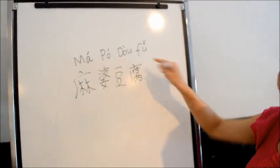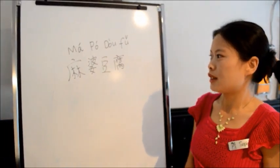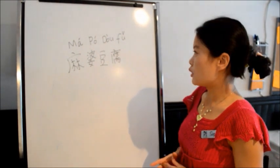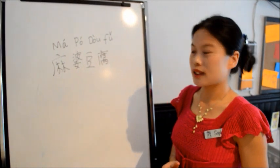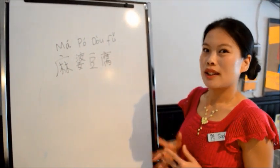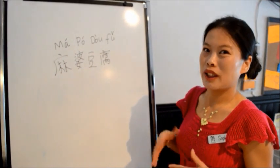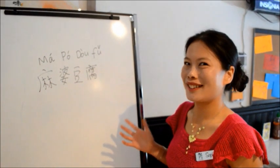Mapo Dou Fu. This dish was invented by a woman called Mapo in the 19th century. Mapo means an old woman with pox on her face. Because this woman she has pox on her face, we call this dish Mapo Dou Fu. Dou Fu means tofu.